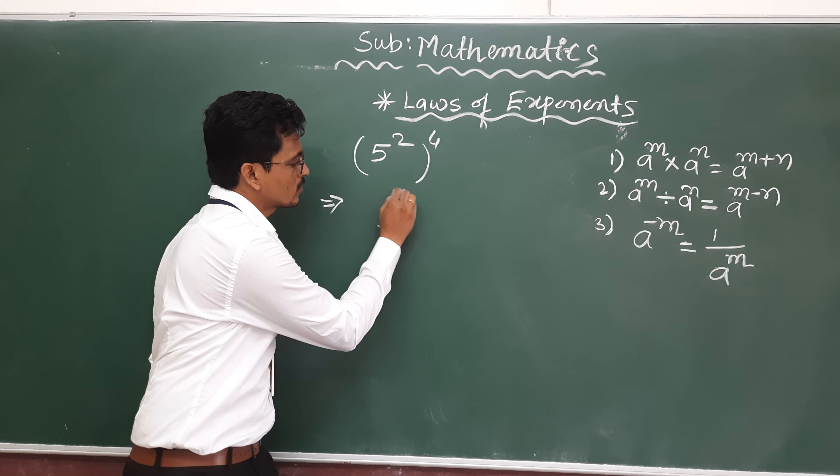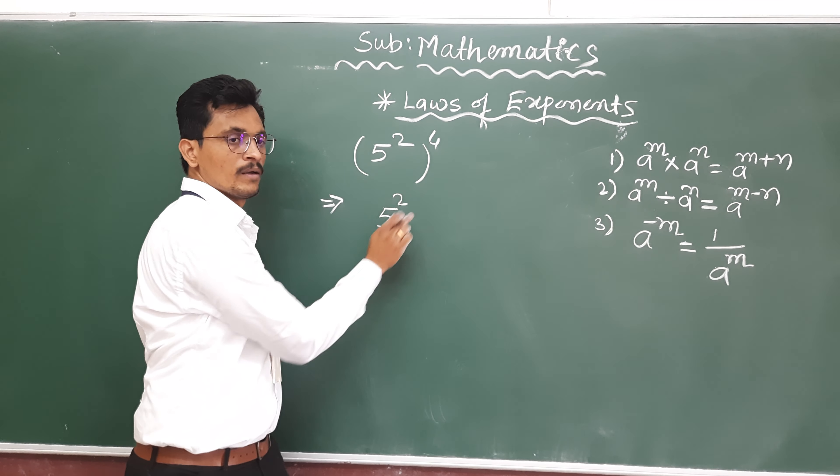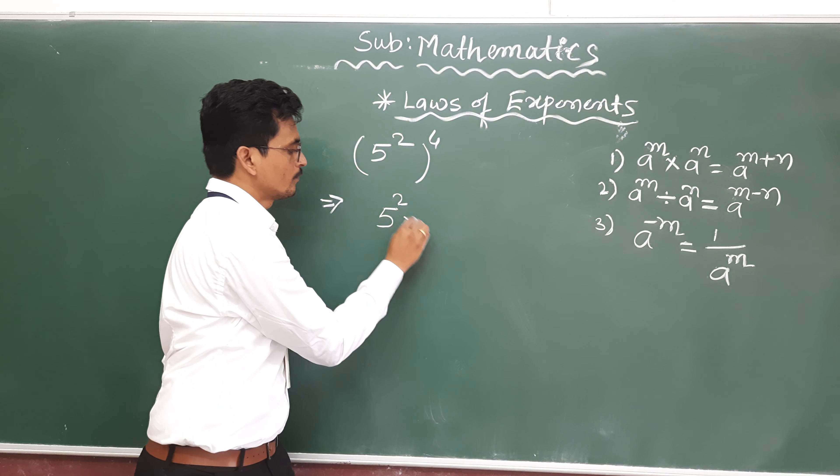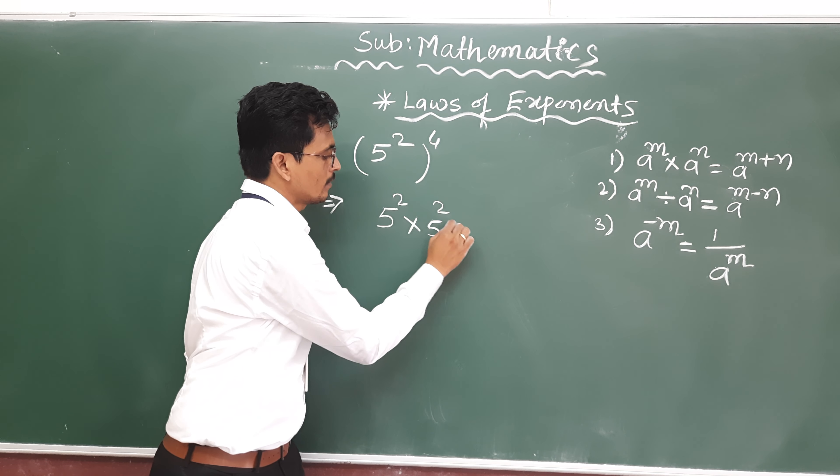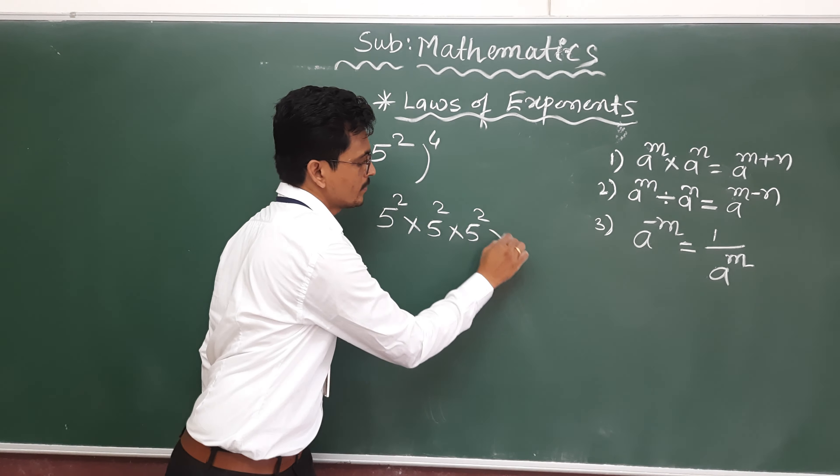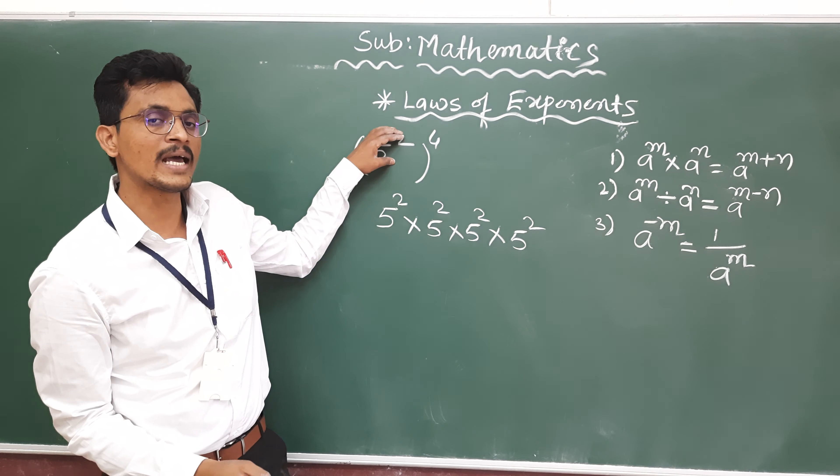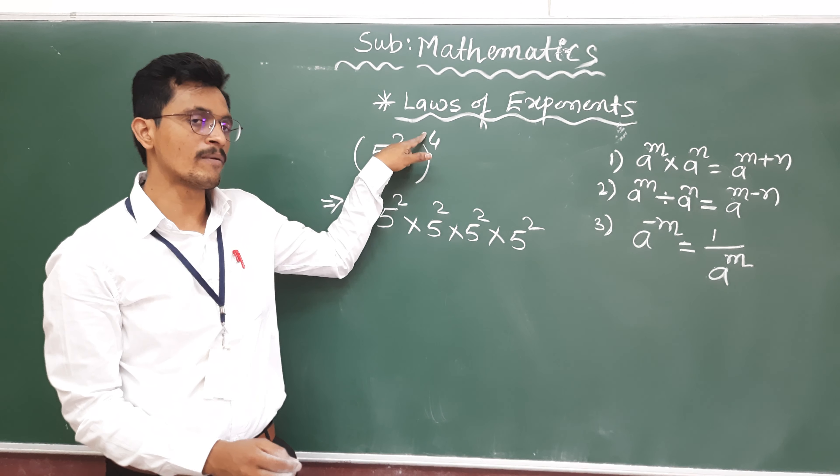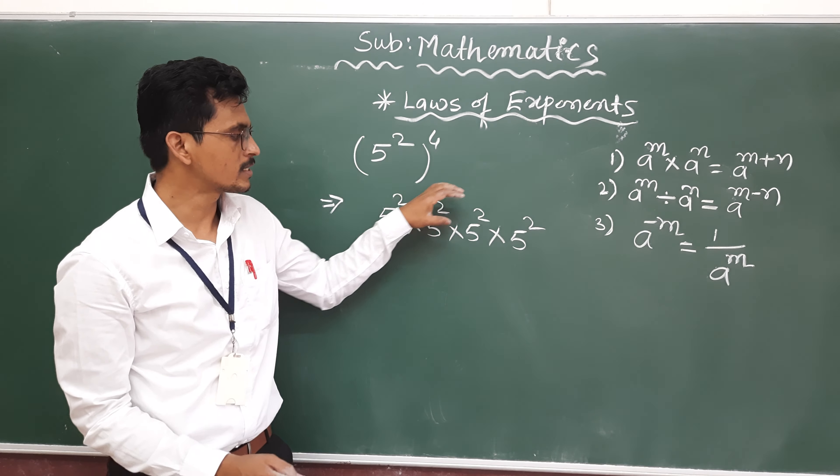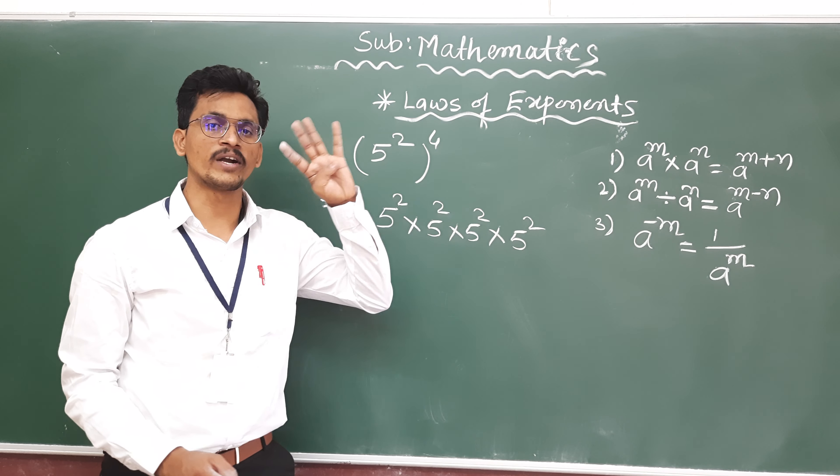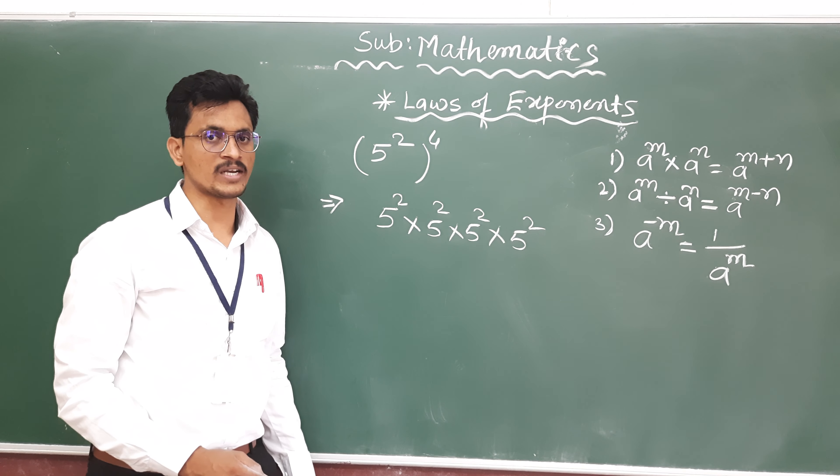We will write 5 square 1 time, 5 square 2 times, 5 square 3 times, 5 square 4 times. This we can consider as x, x, x, x, 4 times. Correct. 4 times.